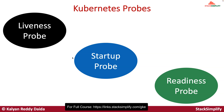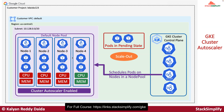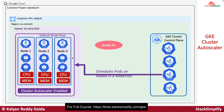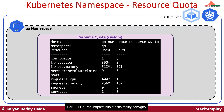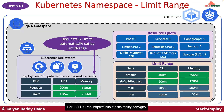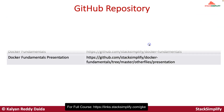From there, we will implement Kubernetes probes like liveness probes, startup probes, and readiness probes. Once that is completed, we will also learn about Kubernetes requests and limits. Once that is implemented, we will learn about GKE cluster autoscaler scale-out and scale-in. We will then learn about Kubernetes namespaces — what the default namespaces are — and implement Kubernetes namespaces in both imperative and declarative ways. There is a lot of learning curve involved: namespaces in combination with resource quota, and namespaces in combination with limit range. We will implement two demos to understand limit range in detail.